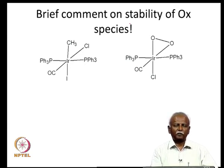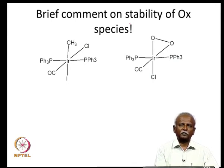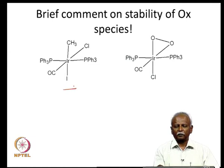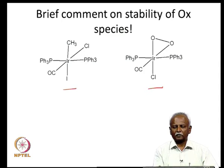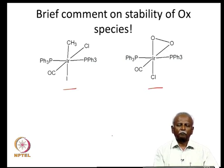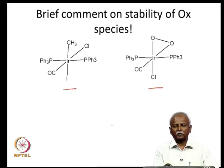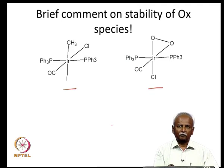When you have Vaska's complex, iridium is in oxidation state +1. After adding methyl iodide, for example, you end up with an oxidation state of +3. If more electronegative elements are attached to the iridium, the +3 oxidation state is more stable. In the examples shown, iridium is attached to iodine and chlorine, or to 2 oxygen atoms and chlorine — electron-withdrawing groups that stabilize the higher oxidation state. This oxidative addition proceeds from left to right in a very exothermic fashion.